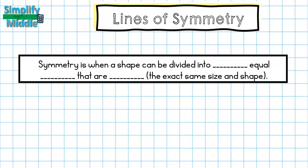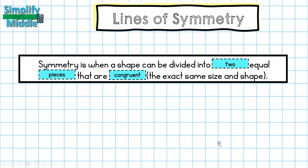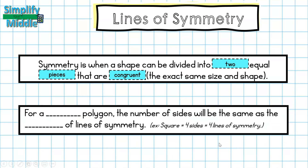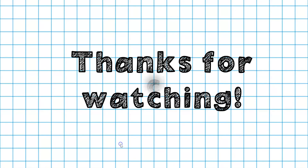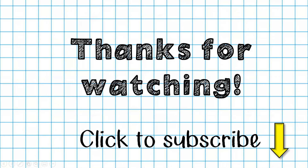Let's recap: symmetry is when a shape can be divided into two equal, congruent pieces — meaning the exact same shape and size. For a regular polygon, the number of sides equals the number of lines of symmetry. For example, a square has four sides and four lines of symmetry. That wraps up our lesson — thanks so much for tuning in. Feel free to subscribe for this and other lessons. Until next time!